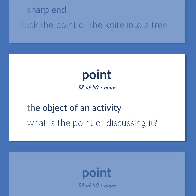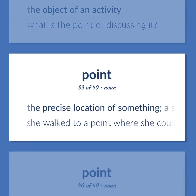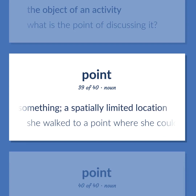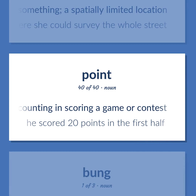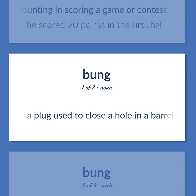The object of an activity — what is the point of discussing it? The precise location of something; a spatially limited location — she walked to a point where she could survey the whole street. The unit of counting in scoring a game or contest — he scored 20 points in the first half. A plug used to close a hole in a barrel or flask.